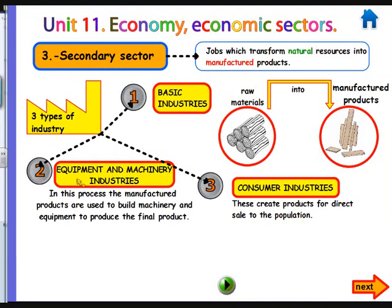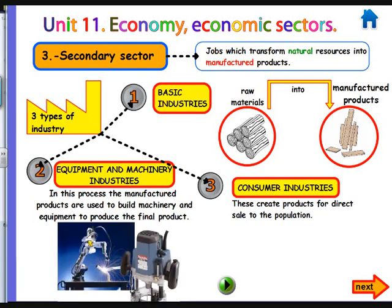The second type of industry is the equipment and machinery industries. In this process, the manufactured products are used to build machinery and equipment to produce the final product, like the milling machine or robots used to build electronic components. Those machines are generally used in dangerous, heavy, and very precise jobs which people cannot do by themselves.